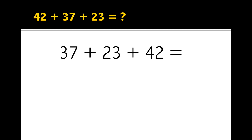We'll change it to 37 plus 23 plus 42. So 37 and 23. First we add the 3 and the 7—that gets 10. Then 20 and 30. So we've got 50 and 10 is 60.